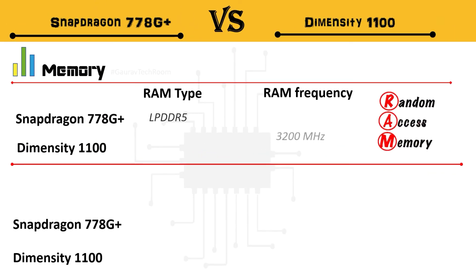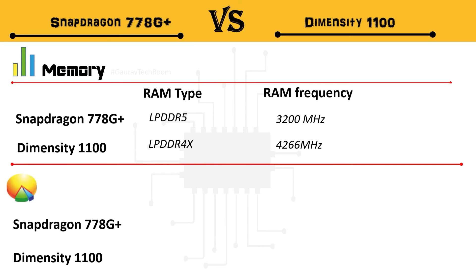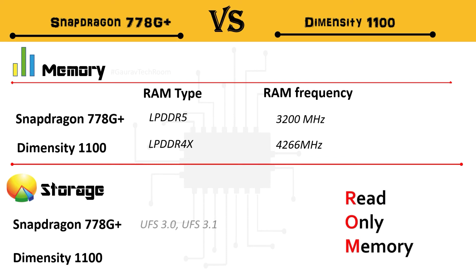For memory, Snapdragon supports LPDDR5 at 3200 MHz, while Dimensity supports LPDDR4X at 4266 MHz. For storage, Snapdragon supports UFS 3.0 and UFS 3.1, while Dimensity supports UFS 3.1.